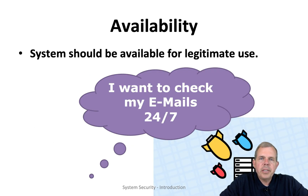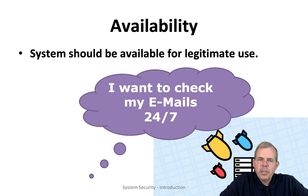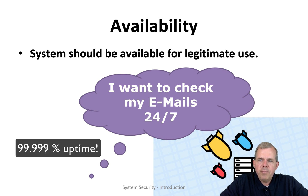Availability is the A part of our triad. If you have a system that is available, it can always be counted on. For instance, Google probably wants to allow people to check their email 24/7, 365 days a year. They want 99.99% uptime.